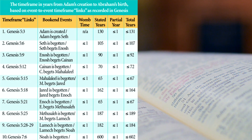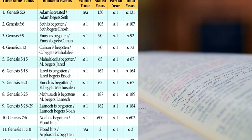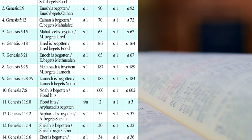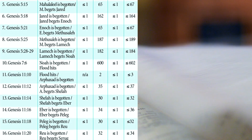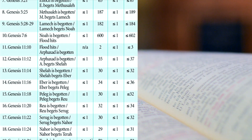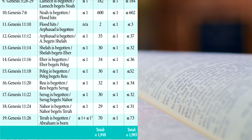Detailed biblical chronologies and genealogies report that a worldwide flood wiped out humanity about 4,500 years ago. The earth was then repopulated by Noah's three sons and their wives.